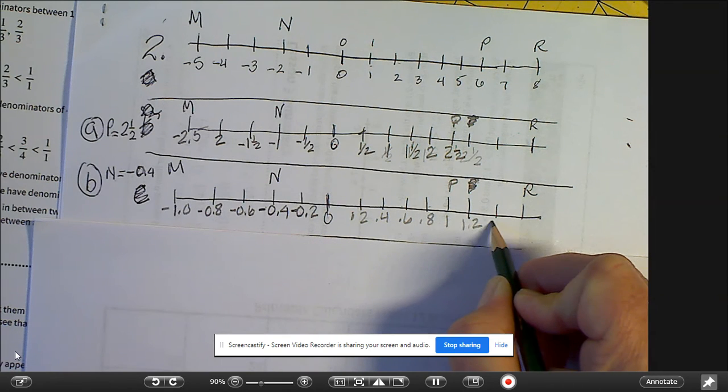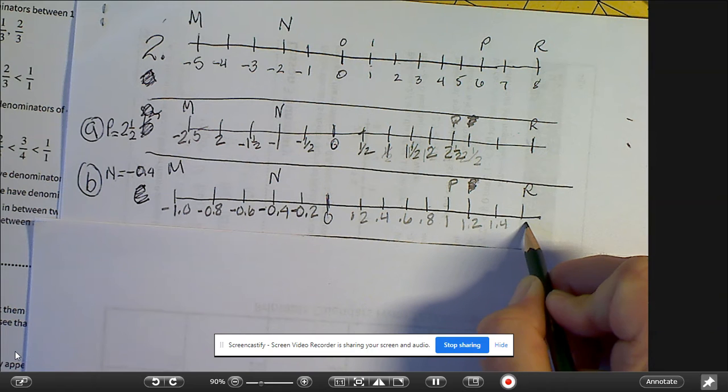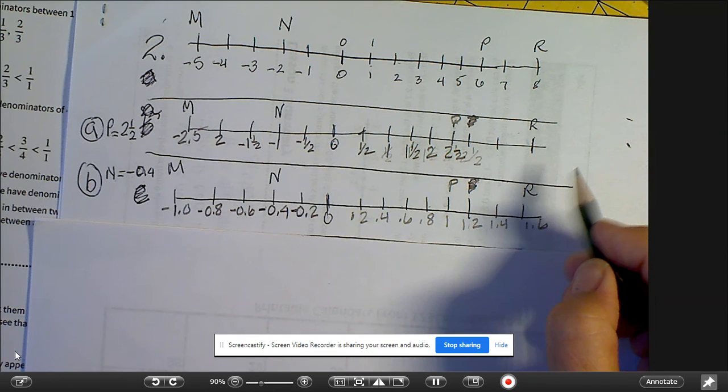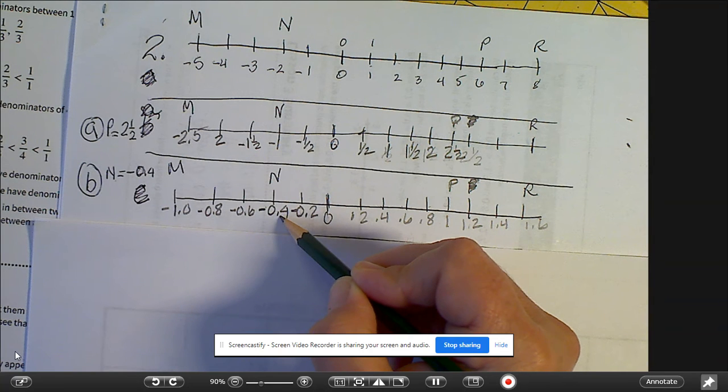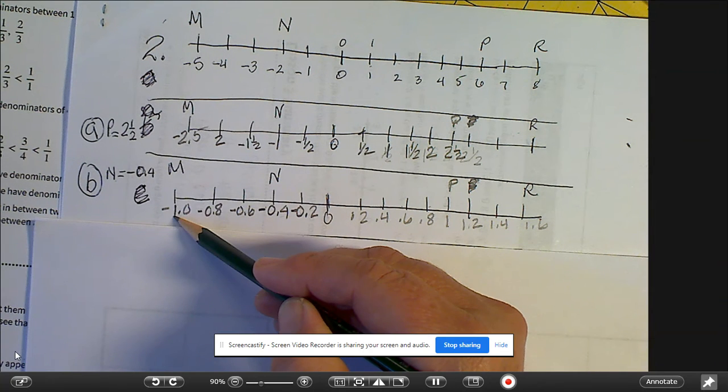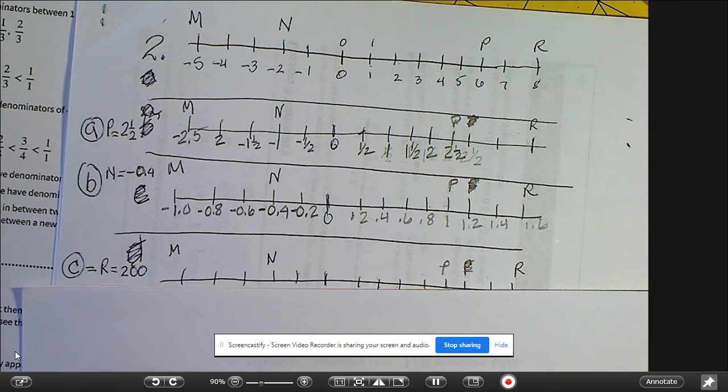1.6. So R would be 1.6, P is 1, N is negative 0.4, and M would be negative 1.